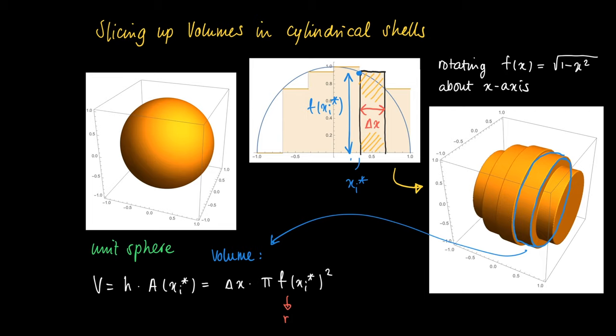And if we now add up all those cylindrical shells then we get a first approximation of the volume enclosed by the unit sphere.